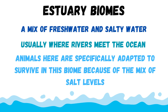Next, we have estuary biomes. Estuary biomes are half freshwater and half marine water. Marine water is very salty, while freshwater does not have much salt. Estuary biomes are really unique because animals that live there have to survive in and handle both of these environments. These biomes occur where rivers meet oceans, and they host a wide variety of plant and animal life capable of living in both freshwater and marine water.